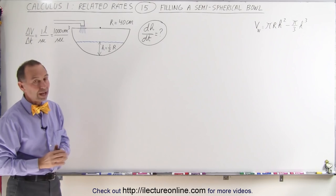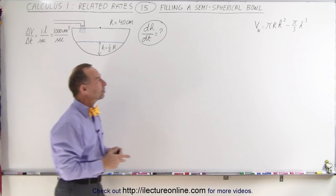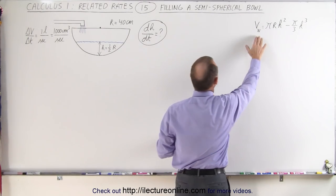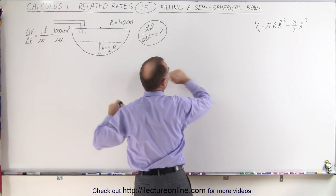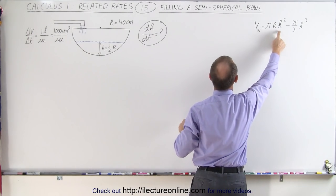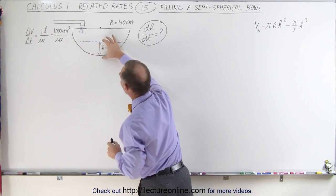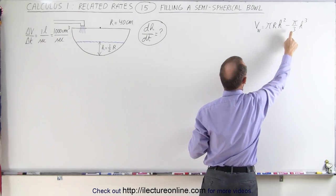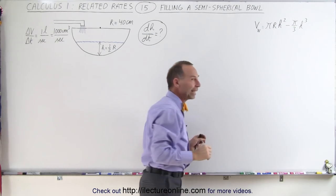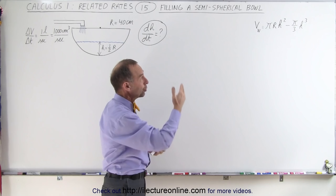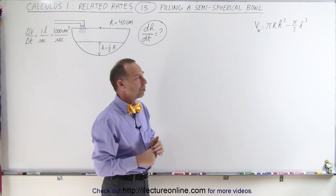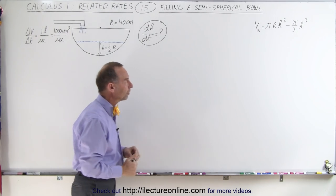To make things a little bit easier for now, because we don't have enough board space otherwise, the volume of the water portion of the bowl is going to be equal to pi r times h squared, h being the height of the water, minus pi over 3 times h cubed. In the next video, we're going to show you how we came up with that equation, but for now we're simply going to use it.